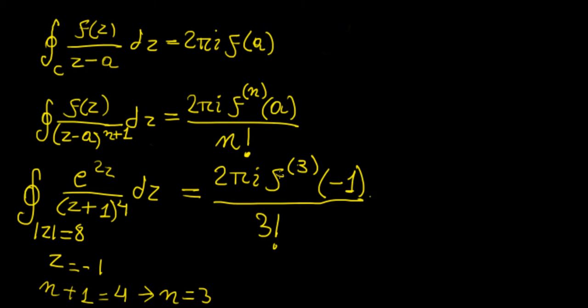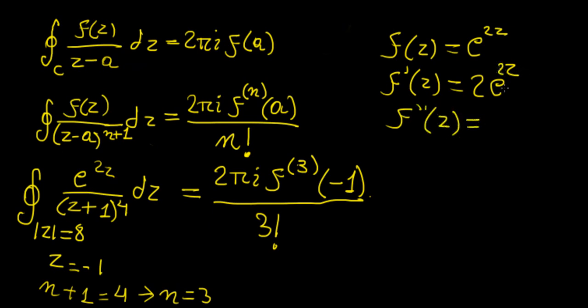So now we need to evaluate the third derivative of this function here. Let's set f(z) equals e^(2z). The first derivative is going to be 2e^(2z), second derivative 4e^(2z), and then the third derivative, let's have three primes, 8e^(2z).